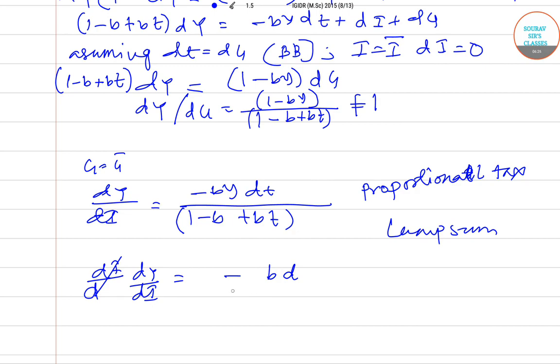So we can see there is a positive term added in the denominator in the proportional case. So obviously this multiplier is lower than the lump sum case.